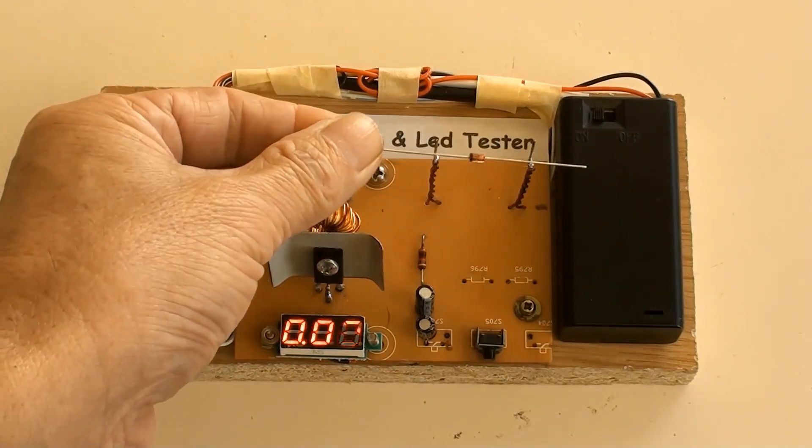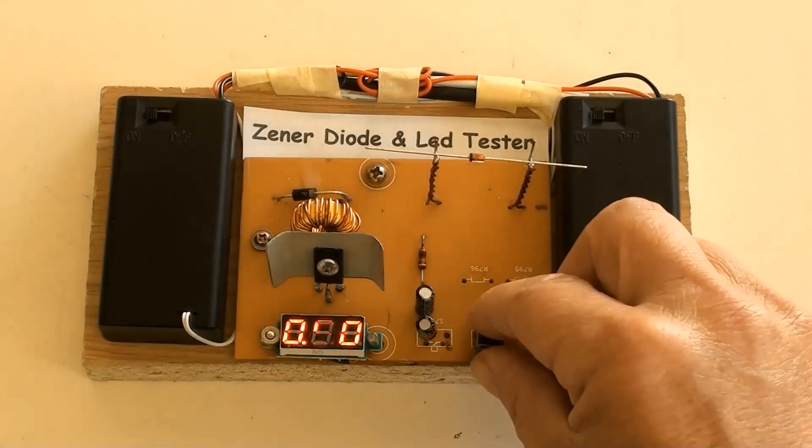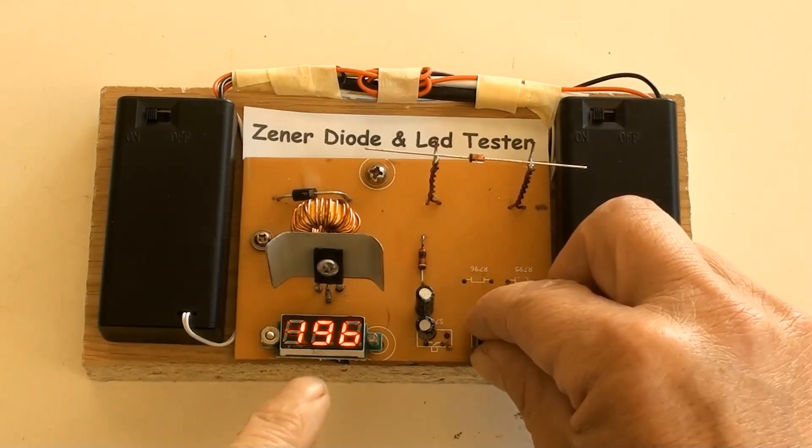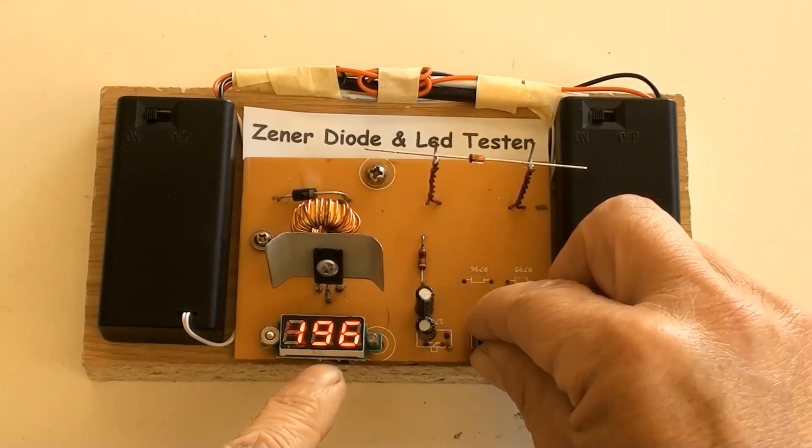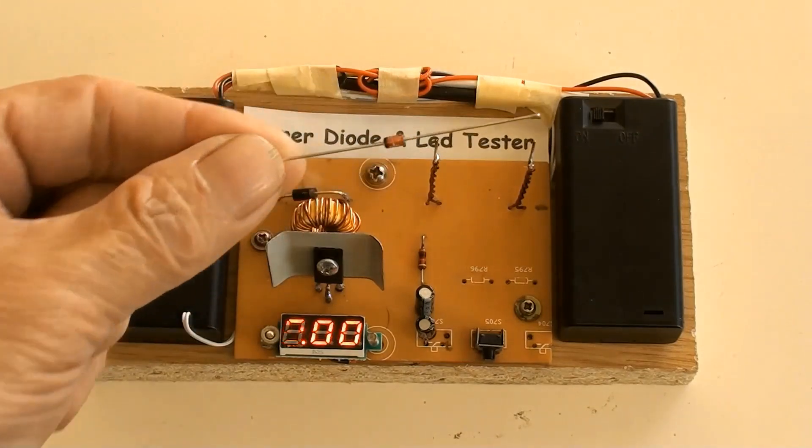To test this Zener diode. It showed 5 volt. So this is a 5 volt Zener diode.